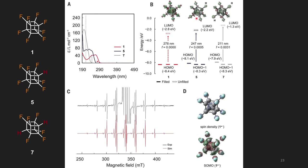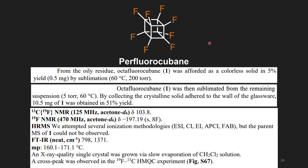They also studied the reduction potentials of heptafluoro and hexafluorocubane, but we're focusing on perfluorocubane. From their supporting information, it's reported as a colorless crystalline solid. Before showing the pictures, let's briefly discuss characterization. All eight carbons are equivalent, so carbon NMR shows a single signal; similarly all eight fluorines are in the same environment, giving a single fluorine NMR signal. They also measured the melting point, reported at 160–171 degrees Celsius, and obtained crystals for X-ray crystallography to definitively prove the structure.